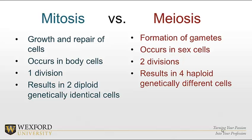Mitosis occurs in the vast majority of bodily cells, while meiosis occurs only in the sex cells. Mitosis undergoes one division, while meiosis undergoes two divisions. And here's the big-ticket item: mitosis results in two diploid genetically identical cells, while meiosis results in four haploid genetically different cells.